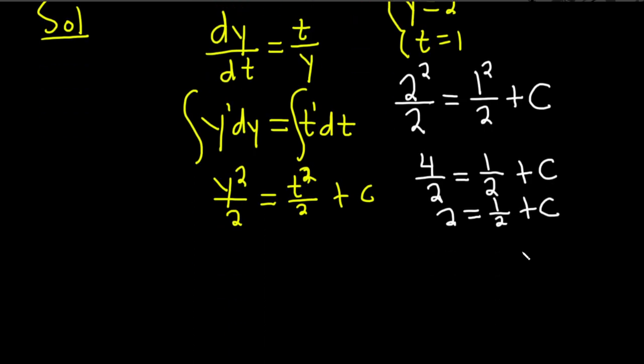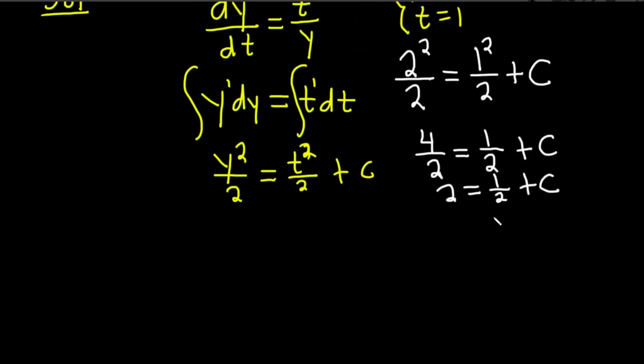And if you solve for c, you would subtract 1 half from both sides. And you would get 2 minus 1 half. You can think of 2 as 4 halves. So 4 halves minus 1 half is 3 halves. So c is equal to 3 halves.